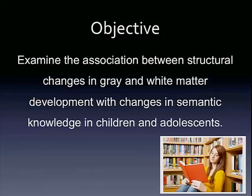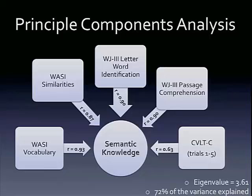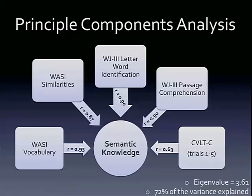For this portion of the presentation, we'll be looking at structural changes in gray and white matter development with semantic knowledge — that underlying construct of verbal or conceptual-based knowledge. We ran a principal component analysis to derive factor scores related to semantic knowledge by looking at raw scores for WASI vocabulary, similarities, letter-word identification on the Woodcock-Johnson (basic reading ability), passage comprehension (reading comprehension), and CVLT trials one through five, which measures verbal learning in a semantic context. The semantic knowledge factor explains 72% of the variance in performance on these measures, and they were all significantly loaded onto this construct.